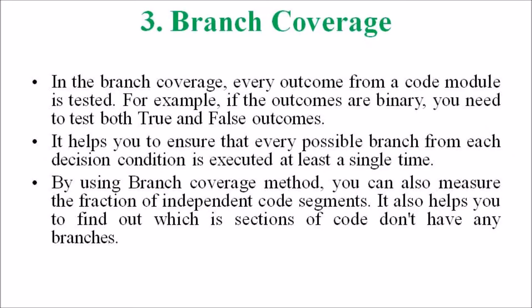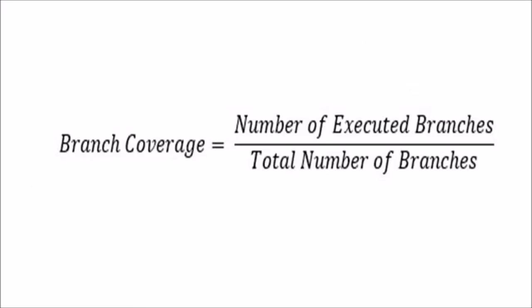When we come to the third coverage mechanism, that is branch coverage: every outcome from a code module is tested. For example, if the outcomes are binary, we need to test both true and false outcomes. It helps to ensure that every possible branch from each decision condition is executed at least once. By using branch coverage, we can also measure the fraction of independent code segments and find out which sections of code don't have any branches. The formula is: branch coverage equals number of executed branches divided by total number of branches.